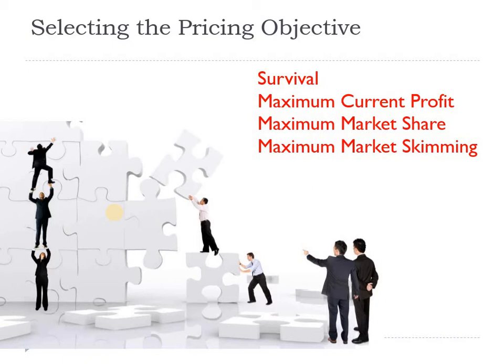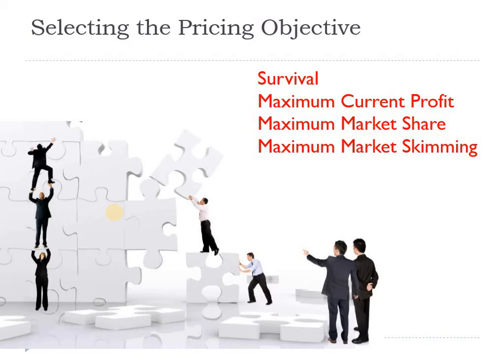For example, some companies might consider survival as their objective. When competition has become intense and consumers are going to the competition, your only objective is to maintain your position in the market. You are just talking survival — not bullying the market. In that case you will keep the price not much different from the competition. You are only trying to recover the costs you are incurring while producing the product. In 2008, when the whole world was down monetarily, people were just trying to cover their cost.